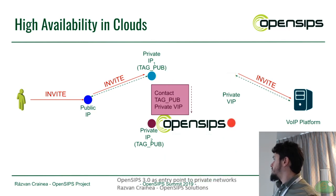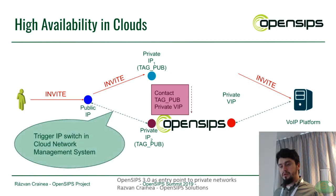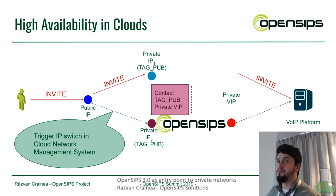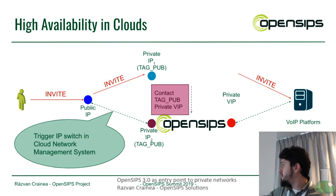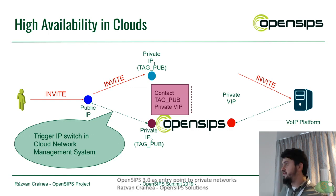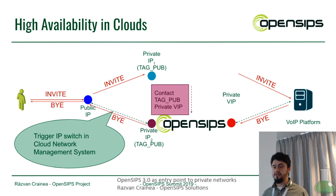After the primary instance goes down, the VIP is moved to the backup. We still need some switching — we have to instruct our cloud provider that the public floating IP or Elastic IP is no longer pointing to the original instance but has moved to the new one. This is something we should monitor, and when we want to trigger the fallback, we instruct the cloud provider to move the IP. When the next invite comes in, we will send it properly downstream to the user.